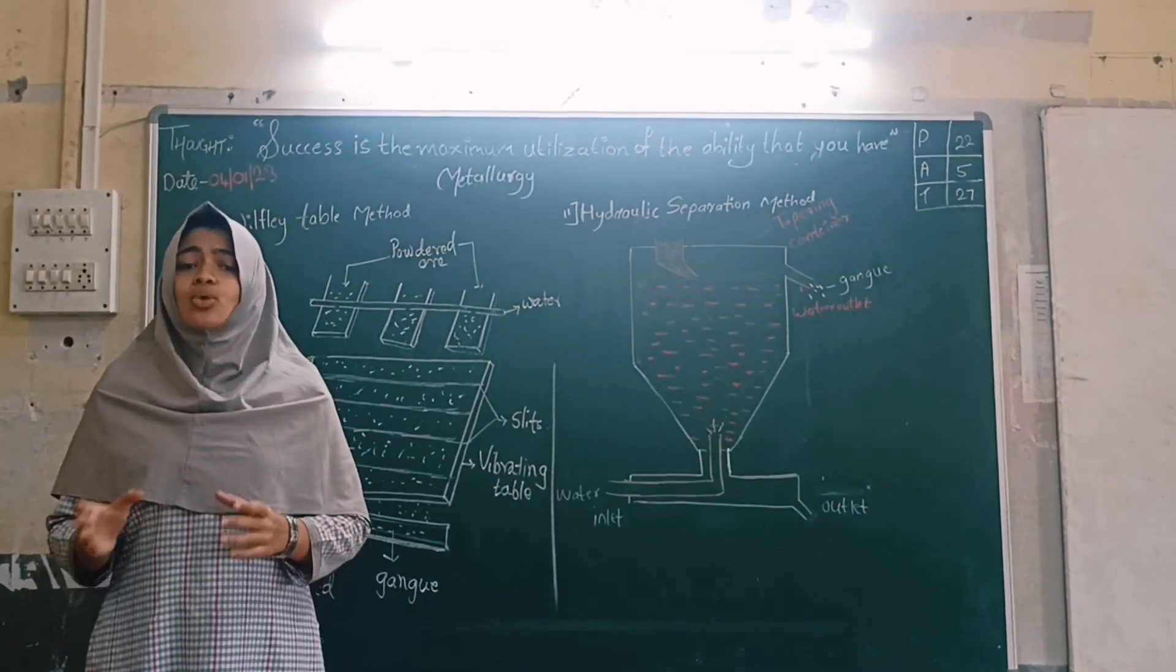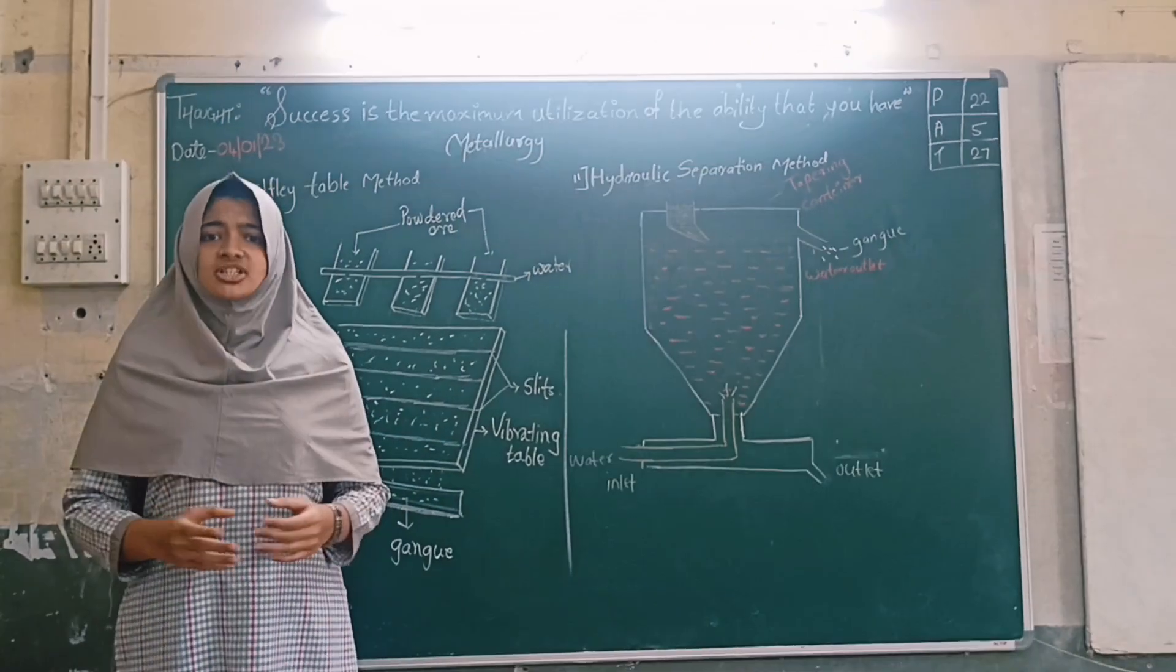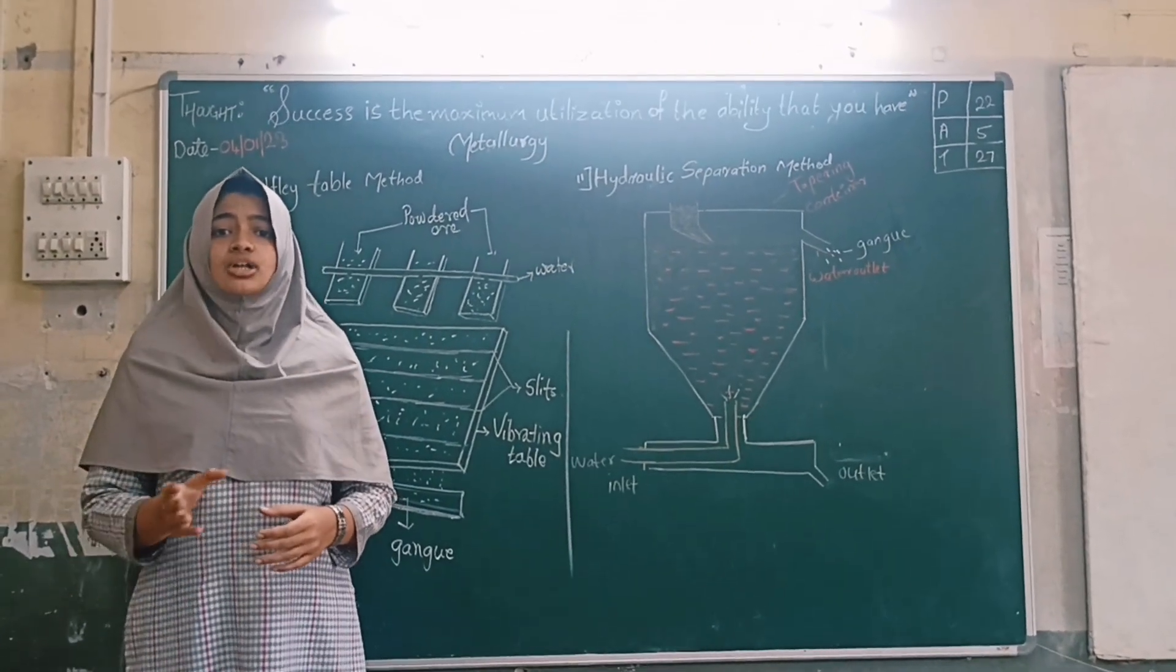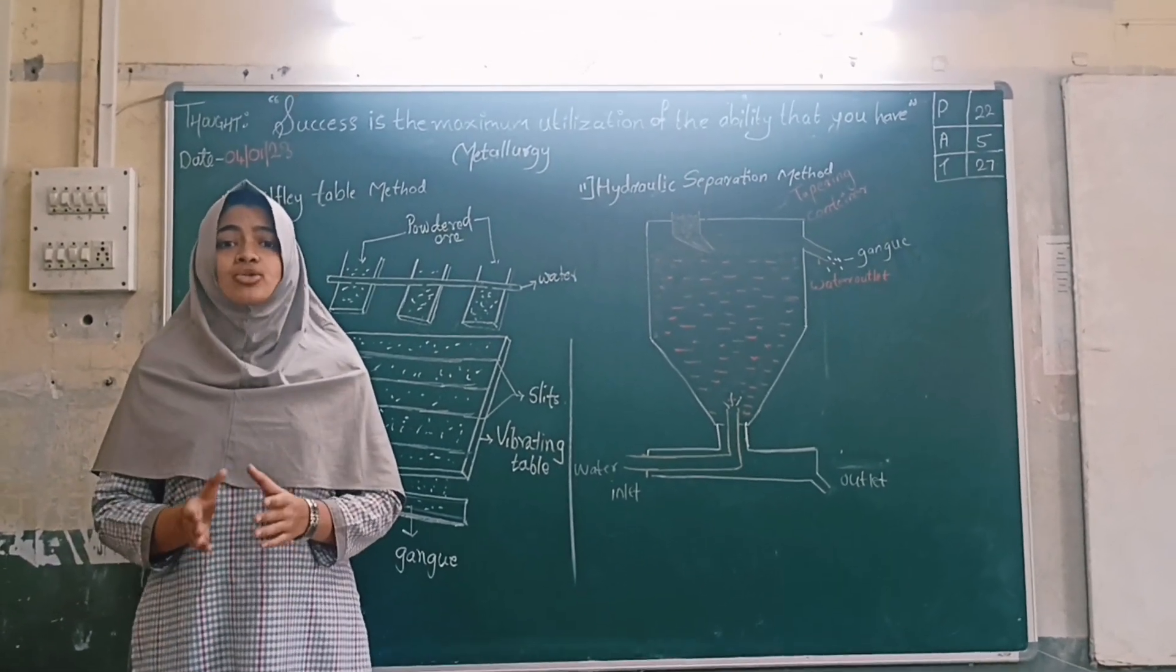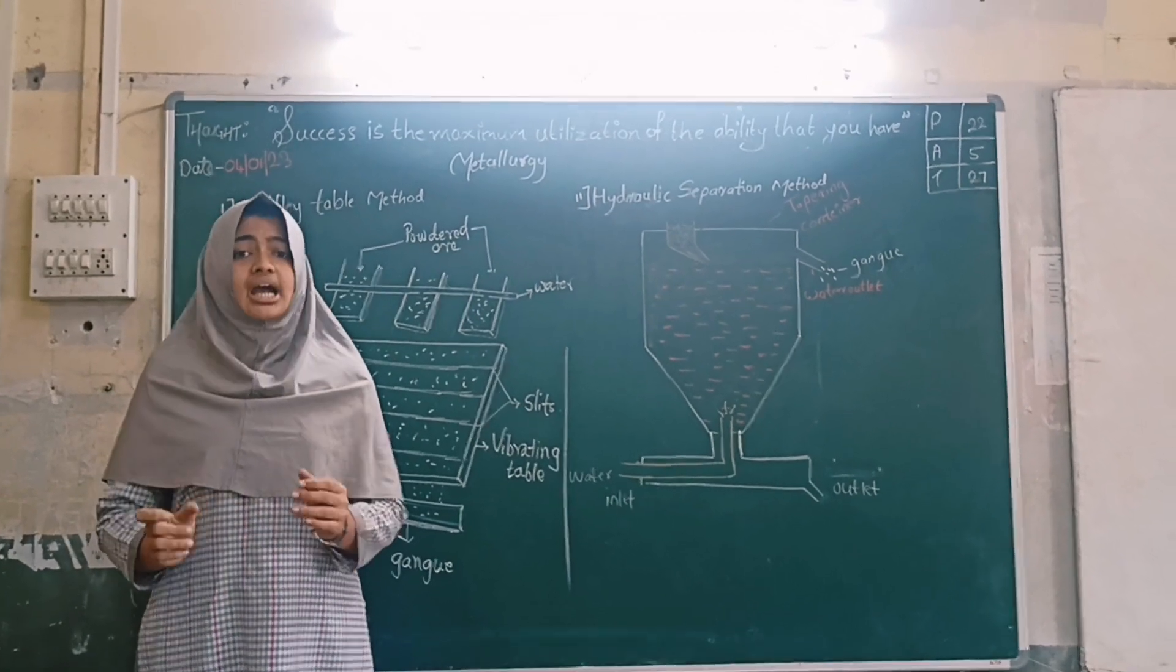Metal is found in nature with lots of impurities and minerals. Now what are minerals? The compounds of metals along with the impurities are called minerals.